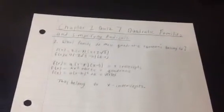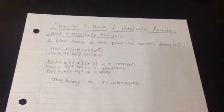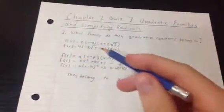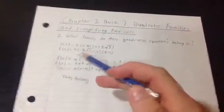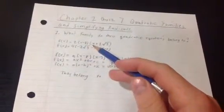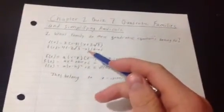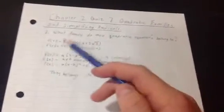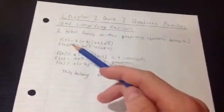Question 1 reads: what family do these quadratic equations belong to? They've given us two different quadratic equations. The first is f(x) = 2(x - 8)(x + 2√3), and then a similar looking equation,